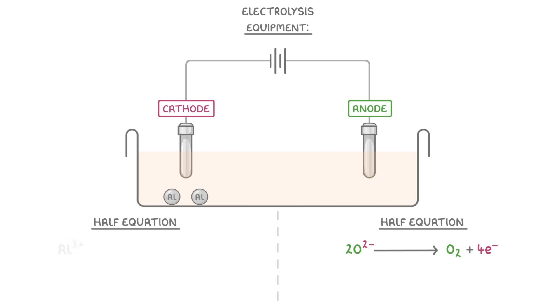Then at the cathode, we have aluminum three plus ions, combining with three electrons to form molten aluminum, which is a liquid.